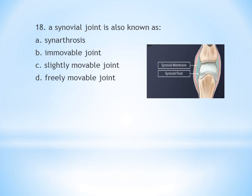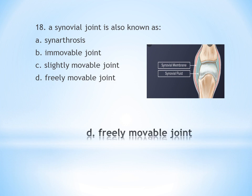Synovial joint is also known as: A. Synarthrosis. B. Immovable joint. C. Slightly movable joint. D. Freely movable joint. A synovial joint is a freely movable joint. For example, the knee is a synovial joint. The answer is D.